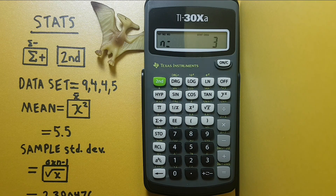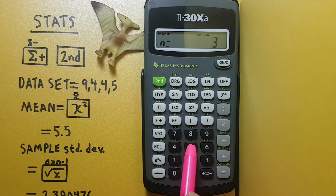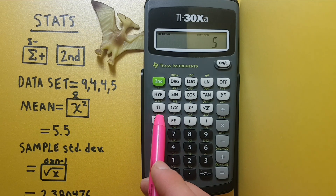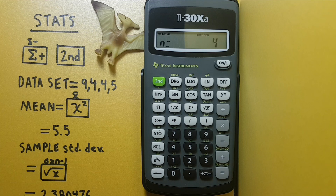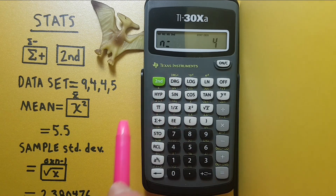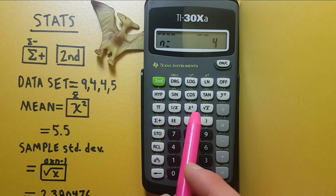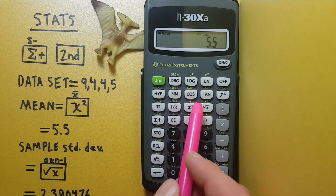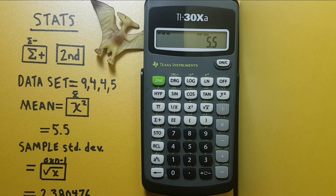All right, let's do the last number: 5, sigma plus. Our data set has now been entered. If we want to find the mean of our data set we press the second function key, and then the x-bar key, and this gives us our mean of 5.5.